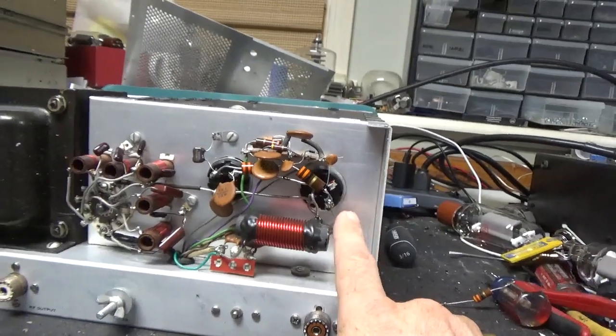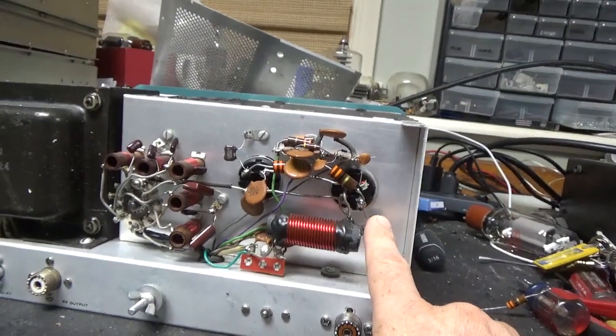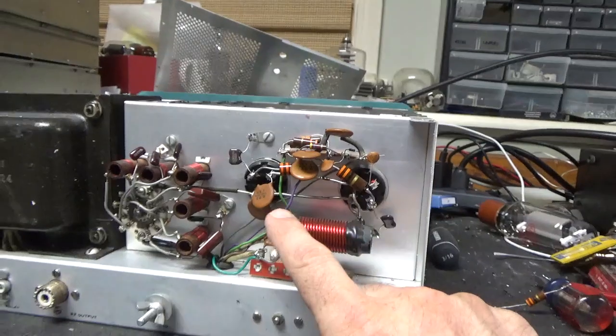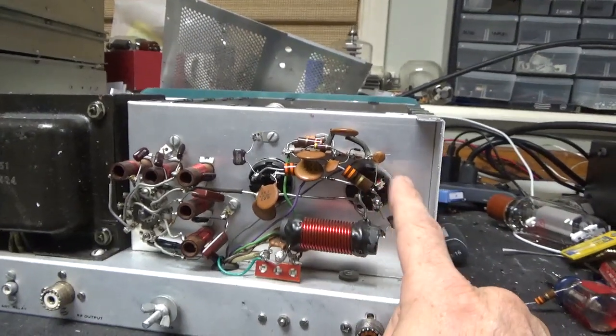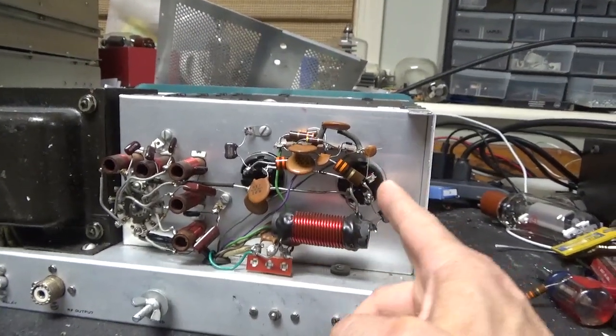Changed the mica caps, 200 pf mica caps, I compressed all the socket clips, sprayed Deoxit Gold on them, inside the clips.